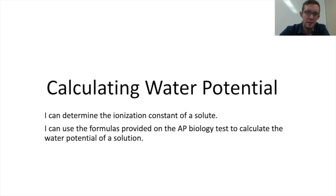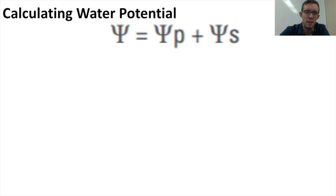And the AP Bio test will ask you to calculate water potential for a given solution. The test will give you a formula that looks like this. In this formula, the left side, this Greek letter psi, represents the water potential. To calculate the water potential of a solution, you need to know two things: the pressure potential of the solution and the solute potential of the solution.